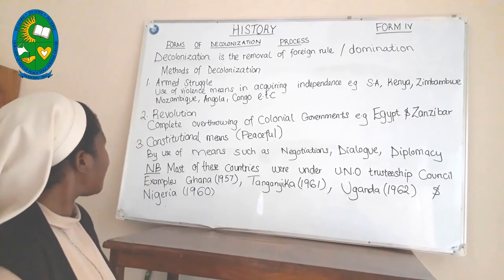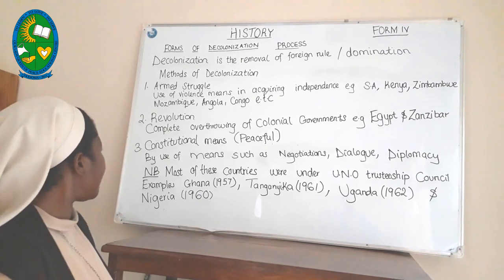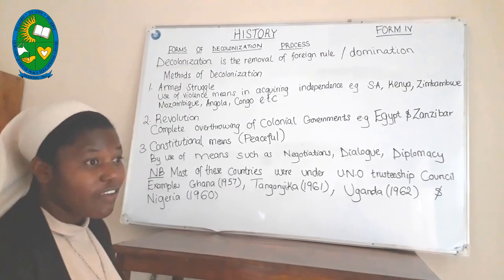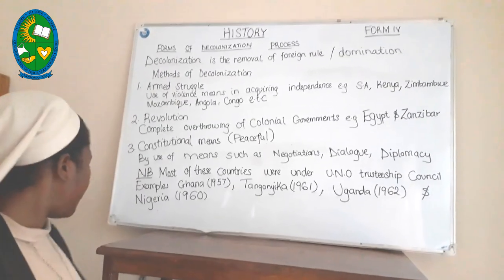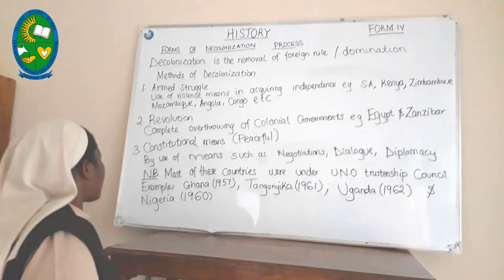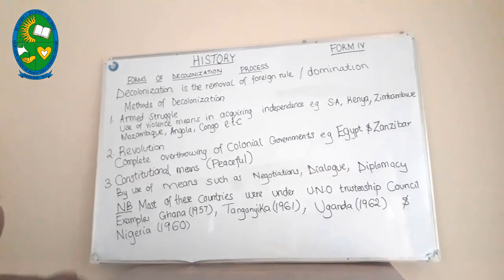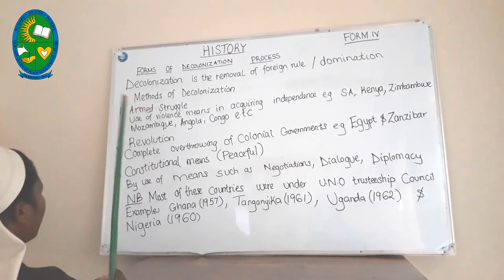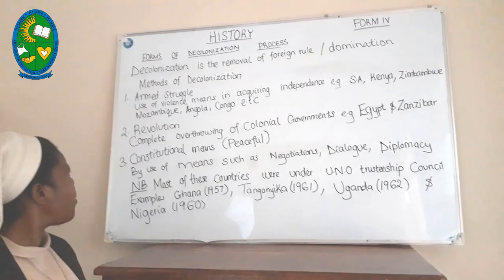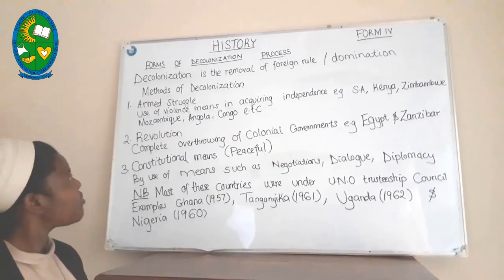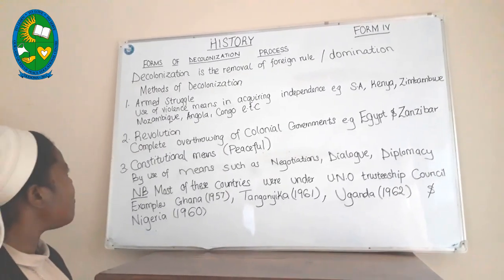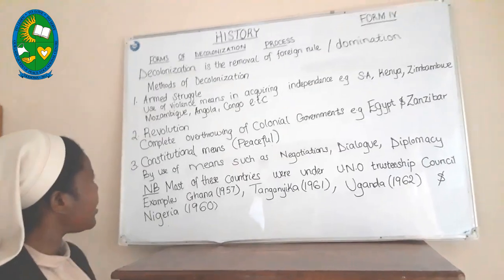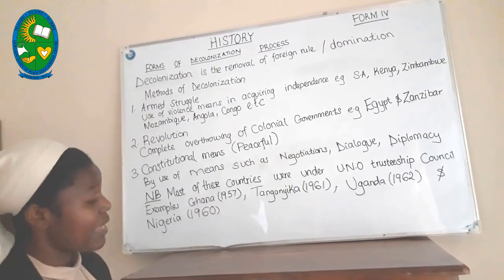We have three forms of decolonization. The first form is decolonization through armed struggle. Armed struggle refers to the violent means of acquiring independence.